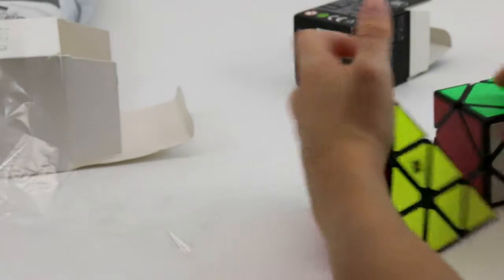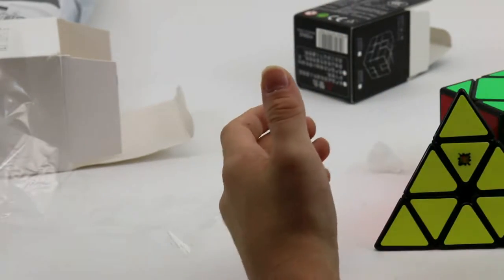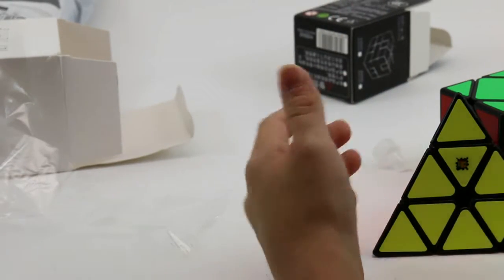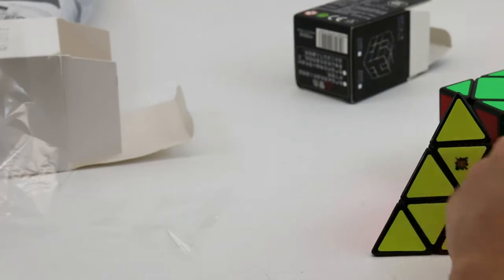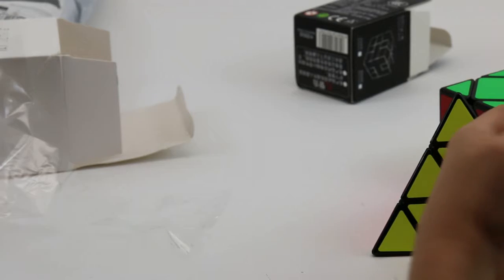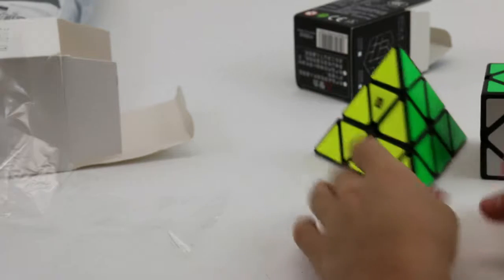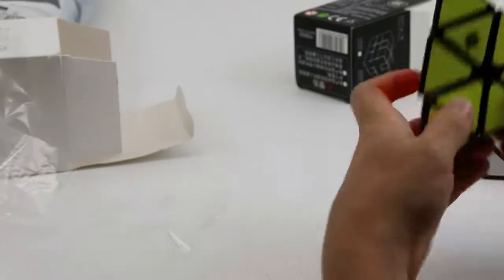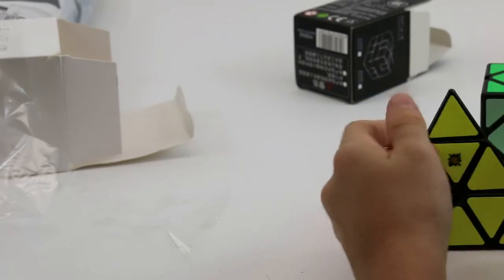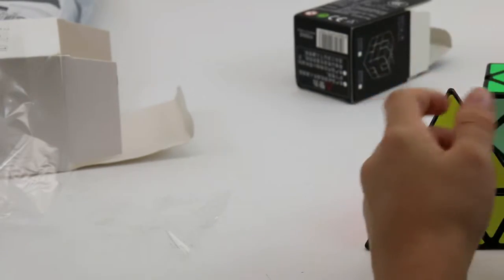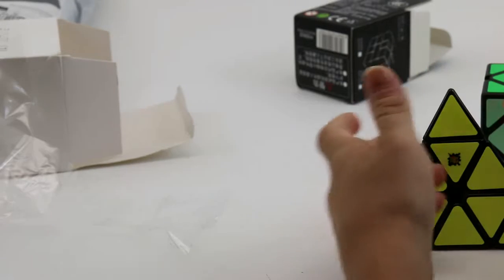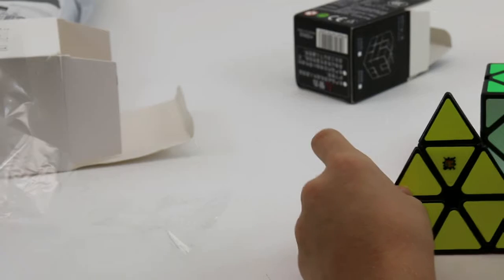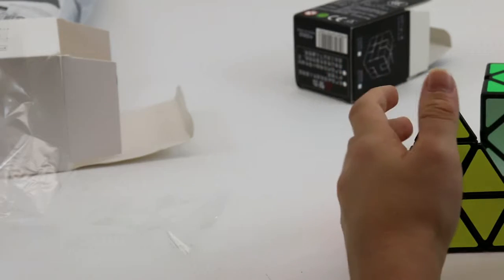Buy the Cubicle MoYu Pyraminx, if you do not have one already, because it's really good. And also buy the X-Man Volt square one. If you don't mind that the slice layer turns faster than the U and D layers. Maybe that's a thing with all square ones. I don't really know. I don't think so. But I will fool around with this square one. I will see what happens.